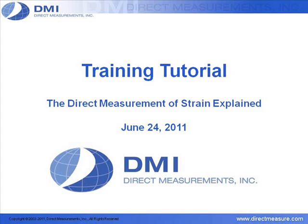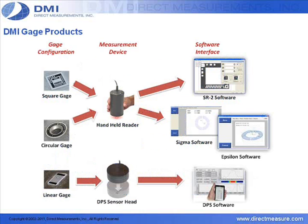This will be explained in this short tutorial video. The direct measure of strain depends on three separate gauge configurations: a square gauge, a circular gauge, and a linear gauge. In all three configurations, the definitions of engineering strain are applicable and will be explained in detail.